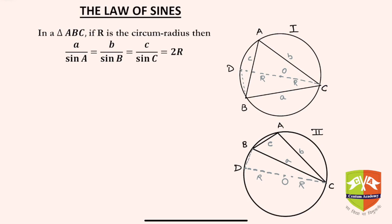If you see in triangle ABC, I have denoted the sides as a, b, and c. You can see in the figure. Now I have joined CD. CD happens to be the diameter in both cases, and this is equal to 2R, twice the radius.